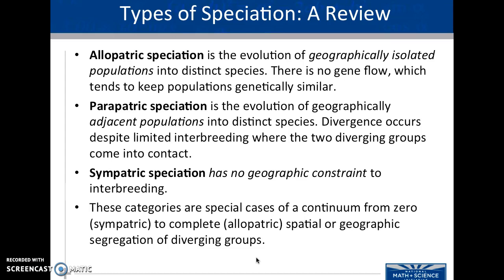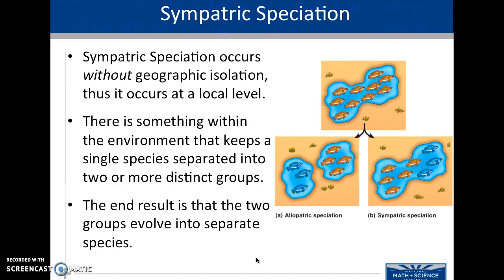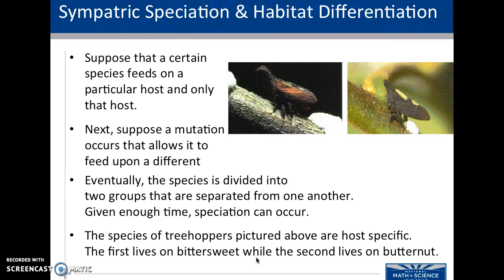Reviewing the types of speciation: we've talked about allopatric and sympatric. Peripatric is kind of meeting in the middle, going from totally being geographically separated to no geographic separation. In sympatric speciation, we see this occurring without geographic isolation, and so it occurs on a very local level. There's something in the environment keeping two groups of the same species apart, and they end up evolving away into two separate species.